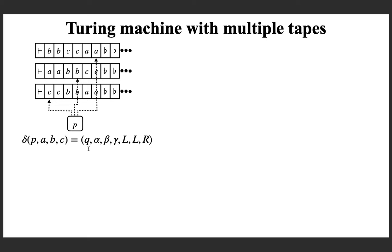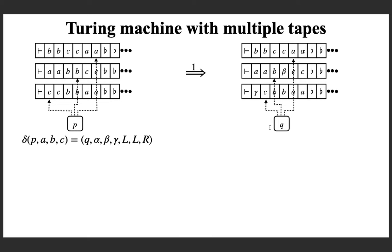You also have to specify the direction of move for the read-write head in each of the three tapes. Here is an example transition: the state changes to Q. On the first tape, the last symbol before the blank was small 'a', replaced with alpha, and the head moves left. On the second tape, small 'b' is replaced with beta and the head moves left. On the third tape, the symbol was small 'c', replaced with gamma, and the head moves right, so the read-write head is positioned to the symbol on the right.